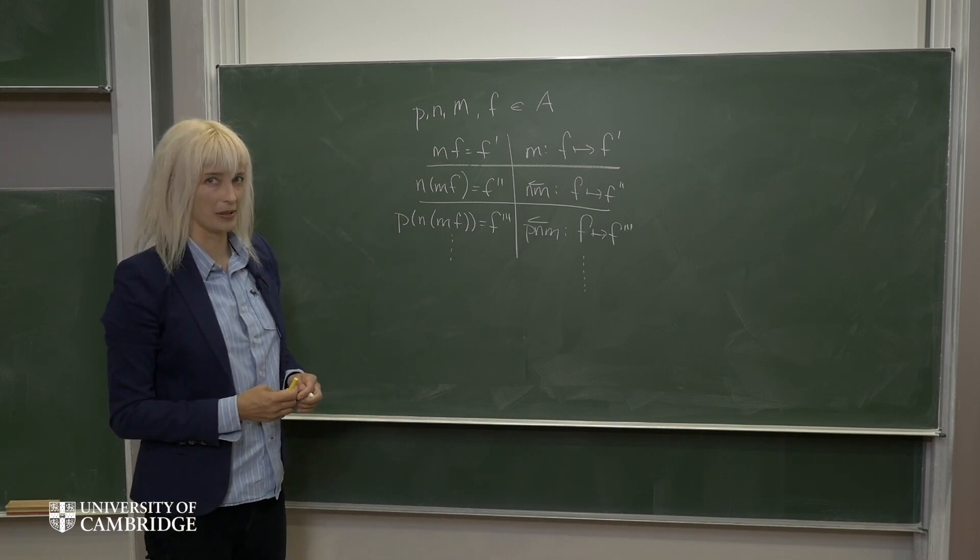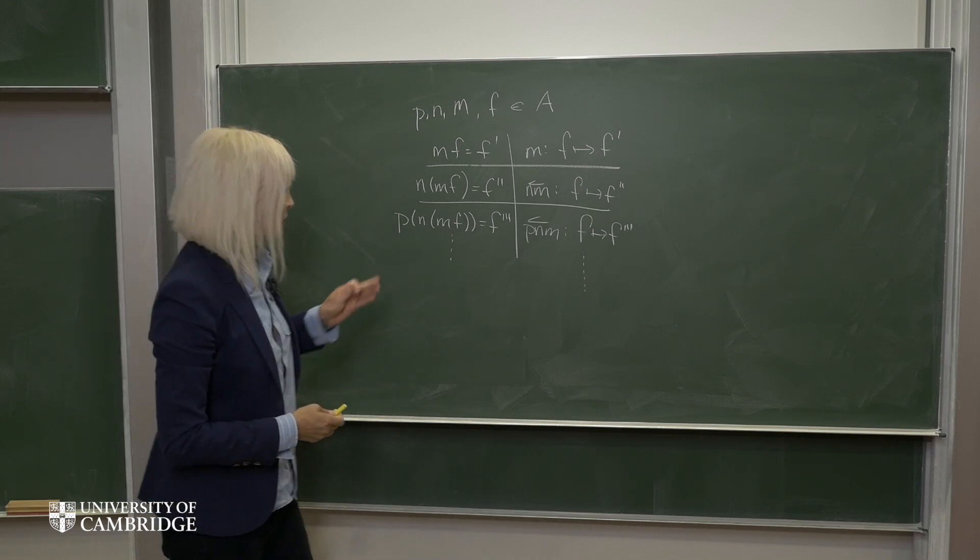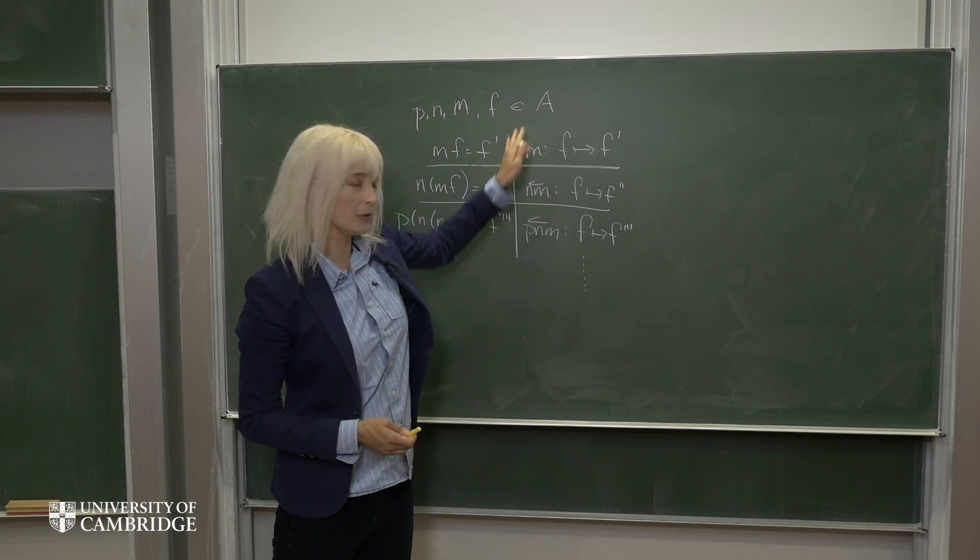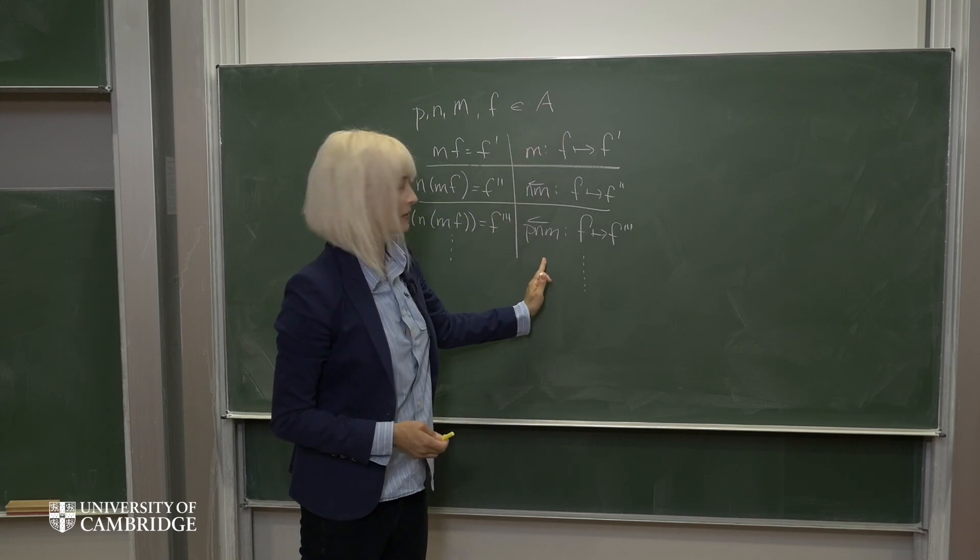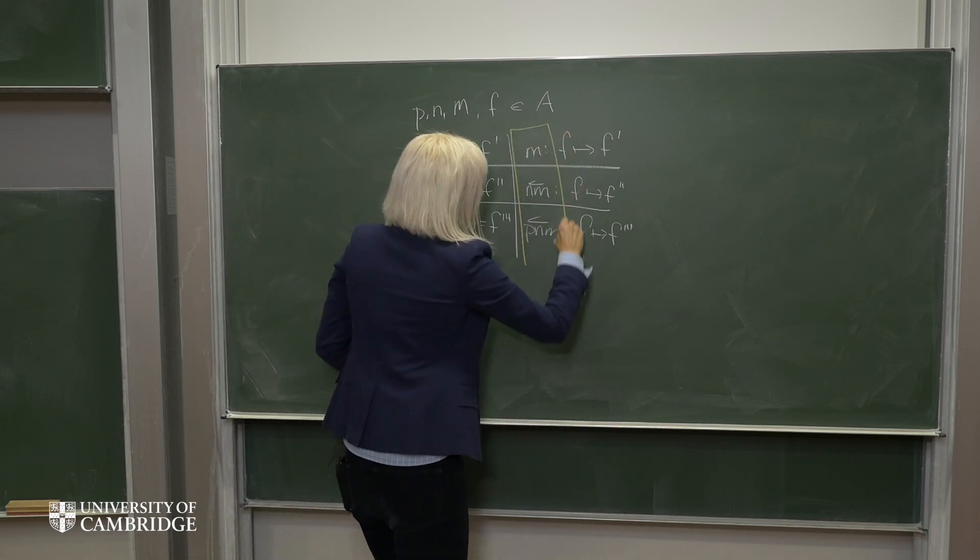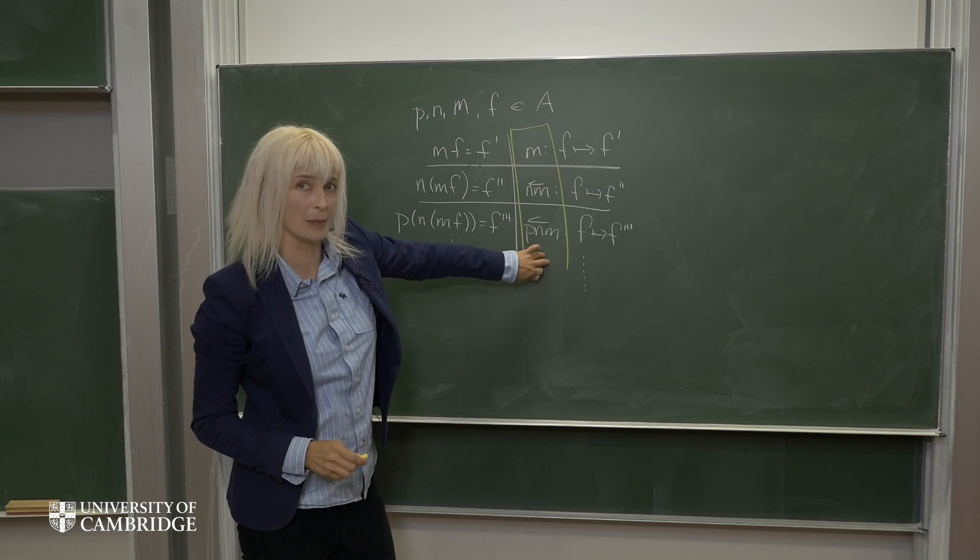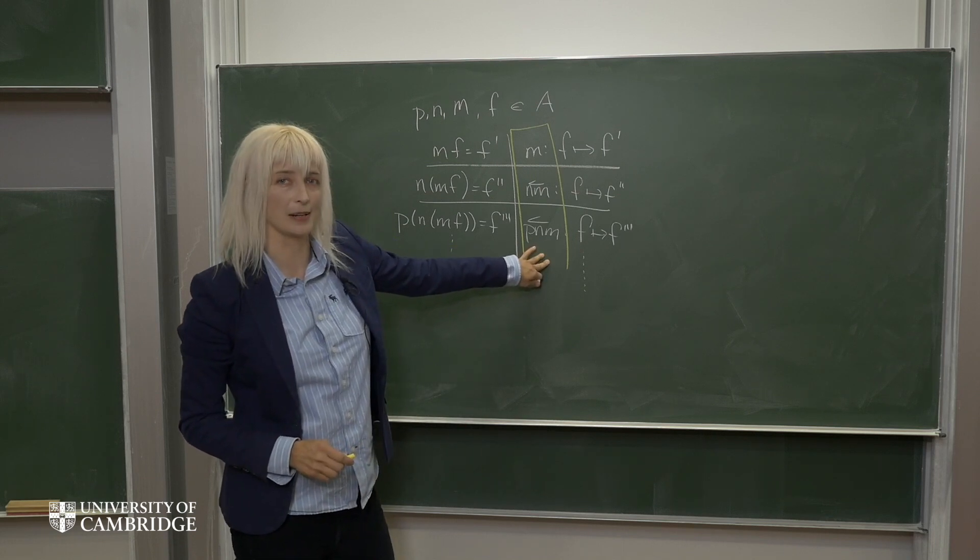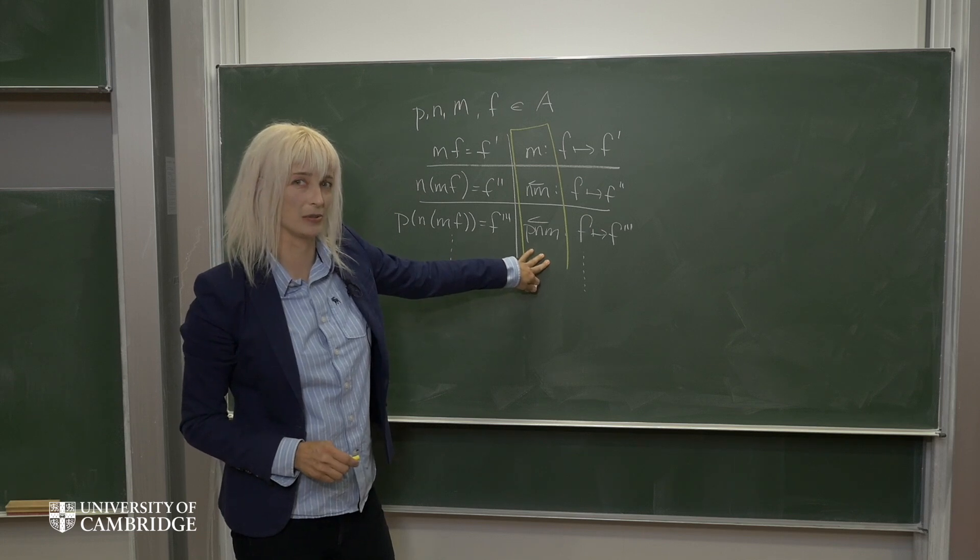So the trick I'd like to propose here is that instead of considering elements of the algebra A, instead we should be considering the space of maps here. So we'd like to consider this space of maps. And the reason why this might be a good idea is because maps, by definition, are associative.